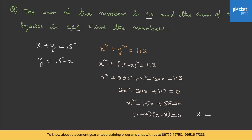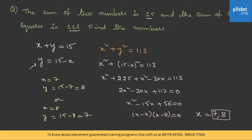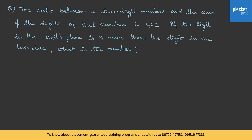Therefore x = 7 or x = 8. Using y = 15 - x: if x = 7 then y = 8, or if x = 8 then y = 7. So the two numbers are 7 and 8. Here we have another question.